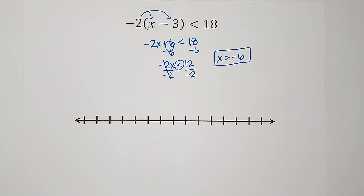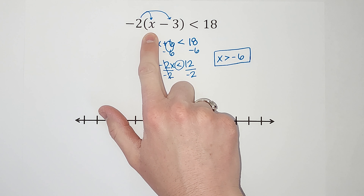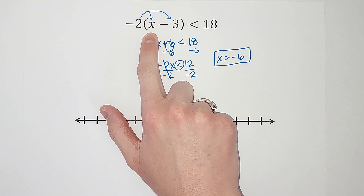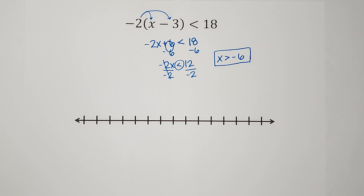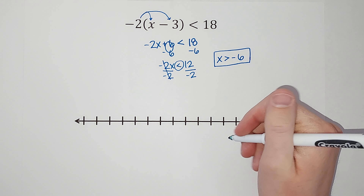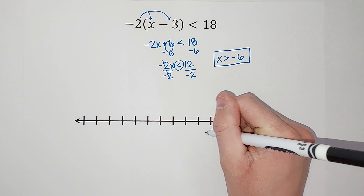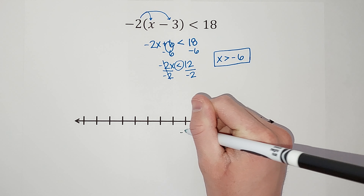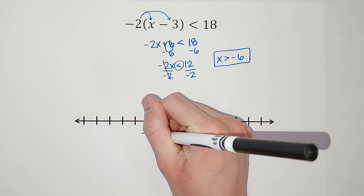Because I divided by a negative, I'm going to flip the sign, so now it's going to be x is greater than — and 12 divided by negative 2 gives me negative 6. So that is my answer. What that answer is telling me is that I can plug in any number bigger than negative 6 and this statement will come out true — this side will be less than that side.